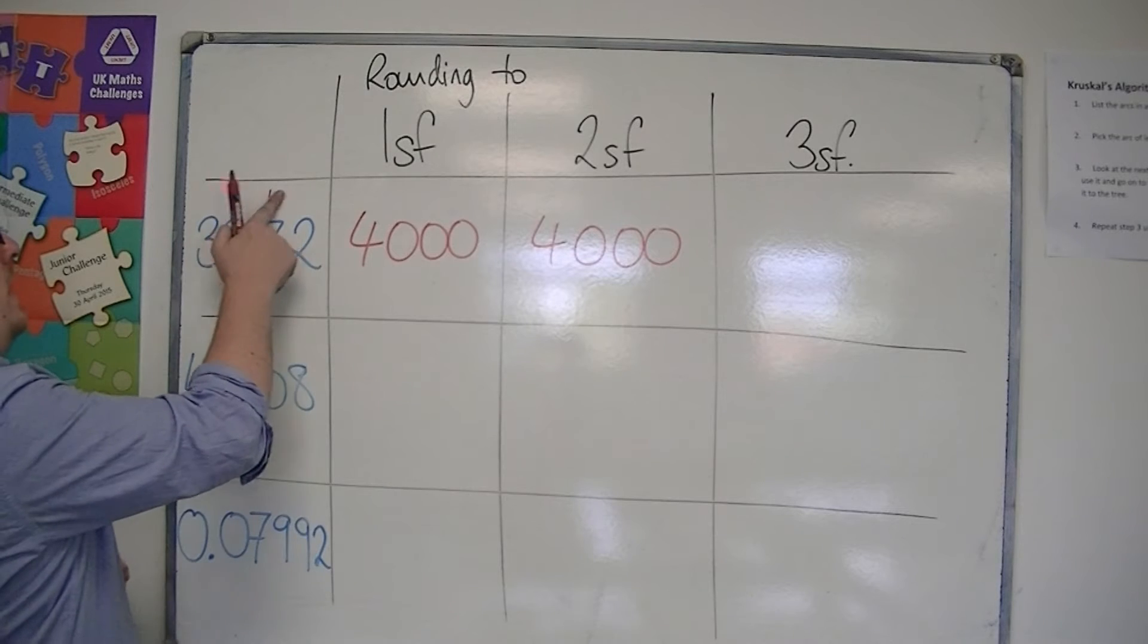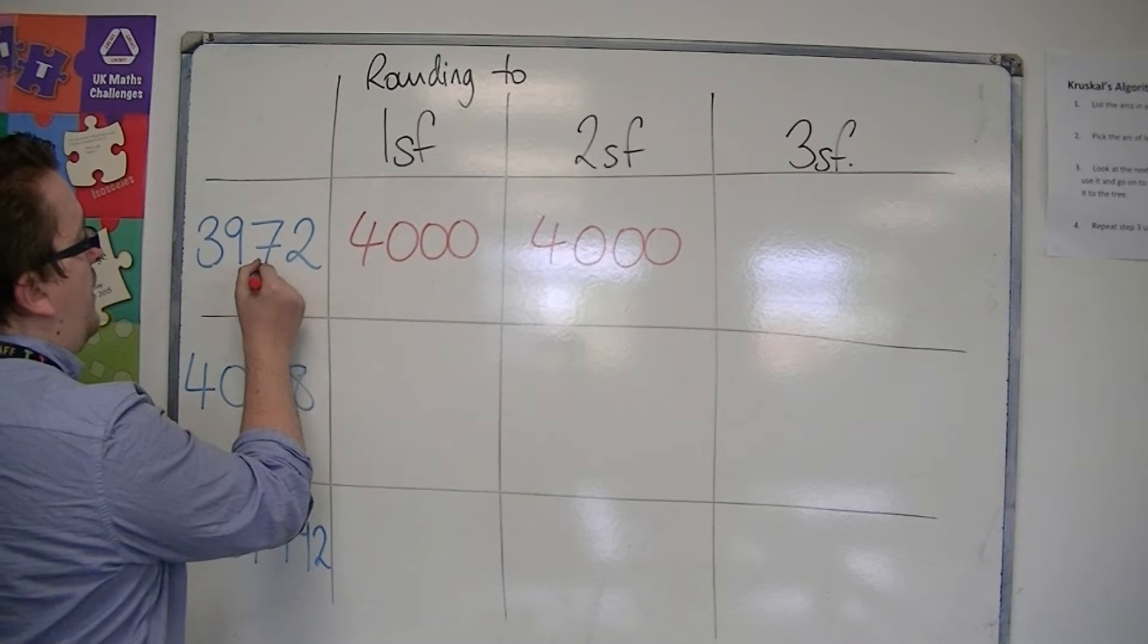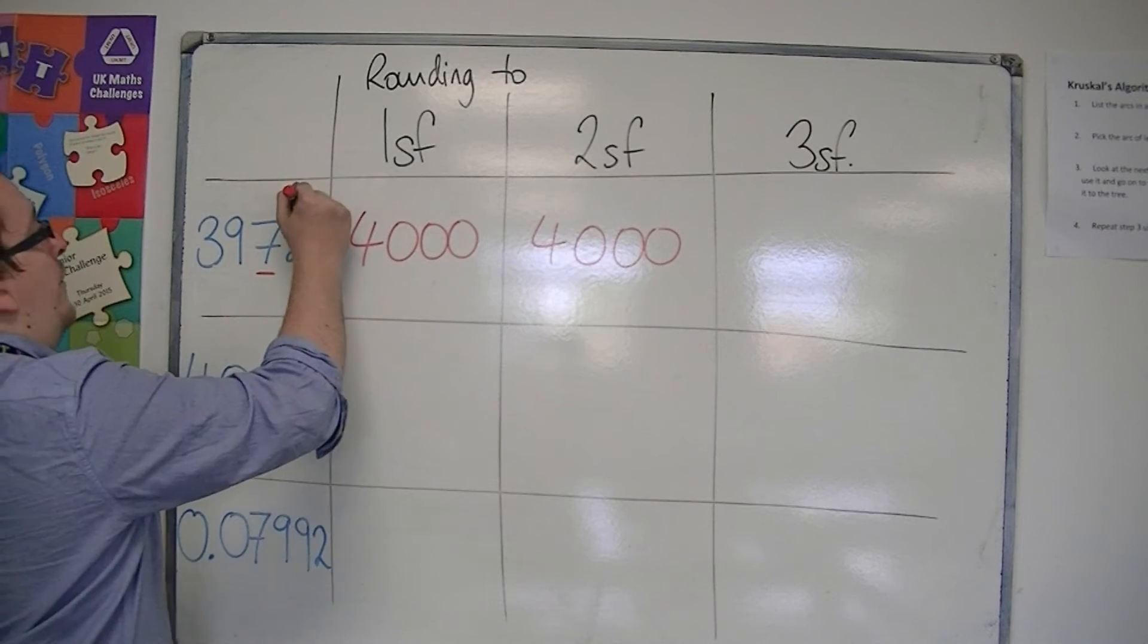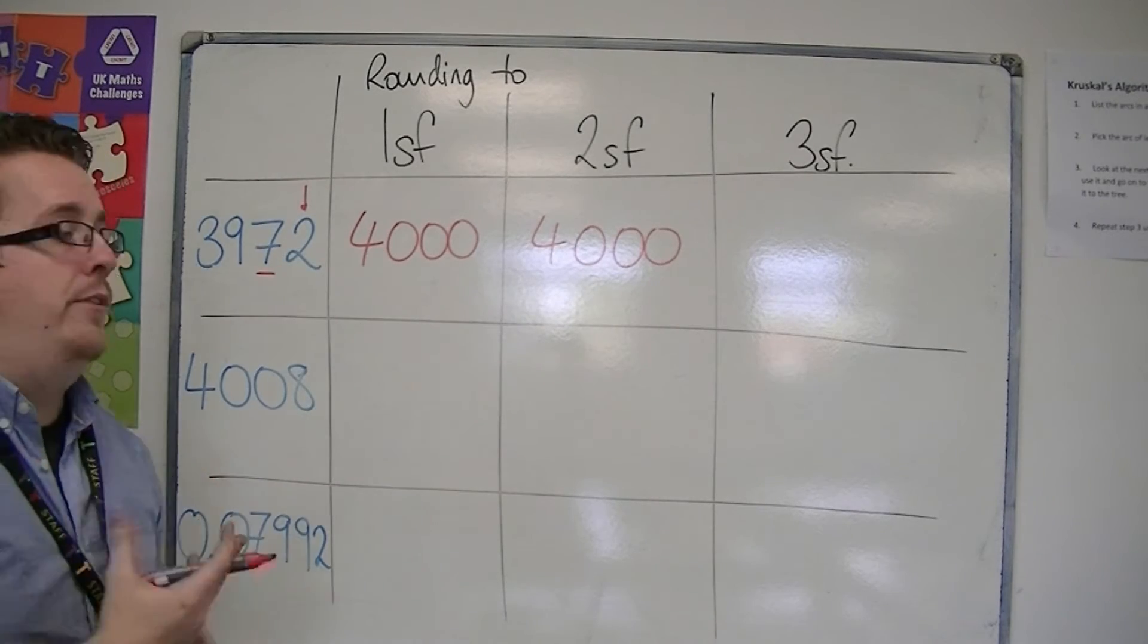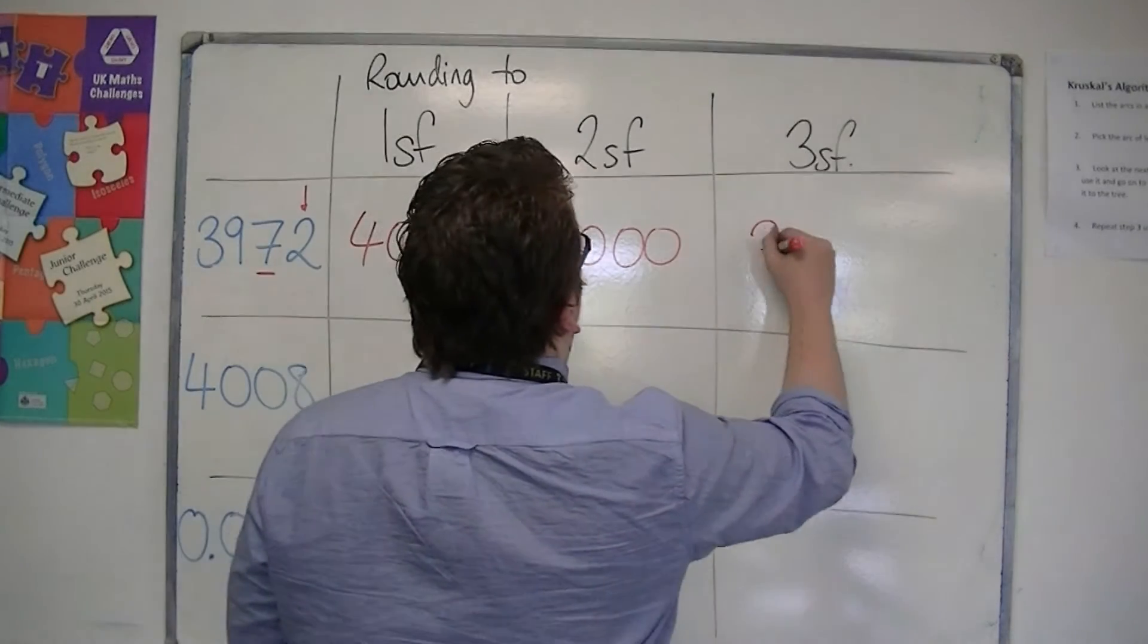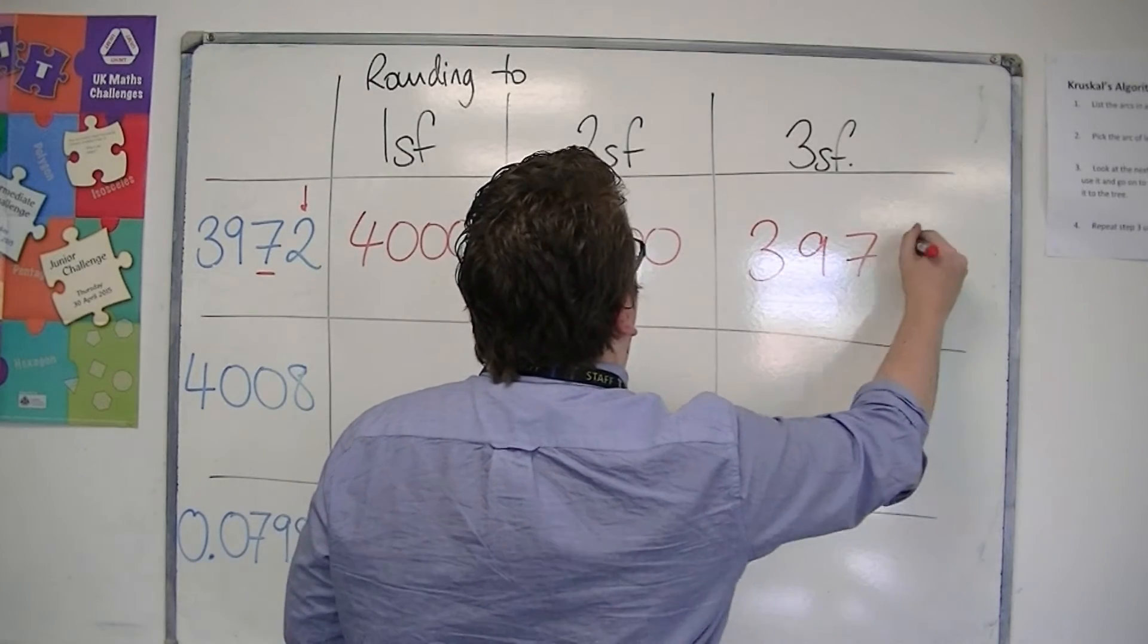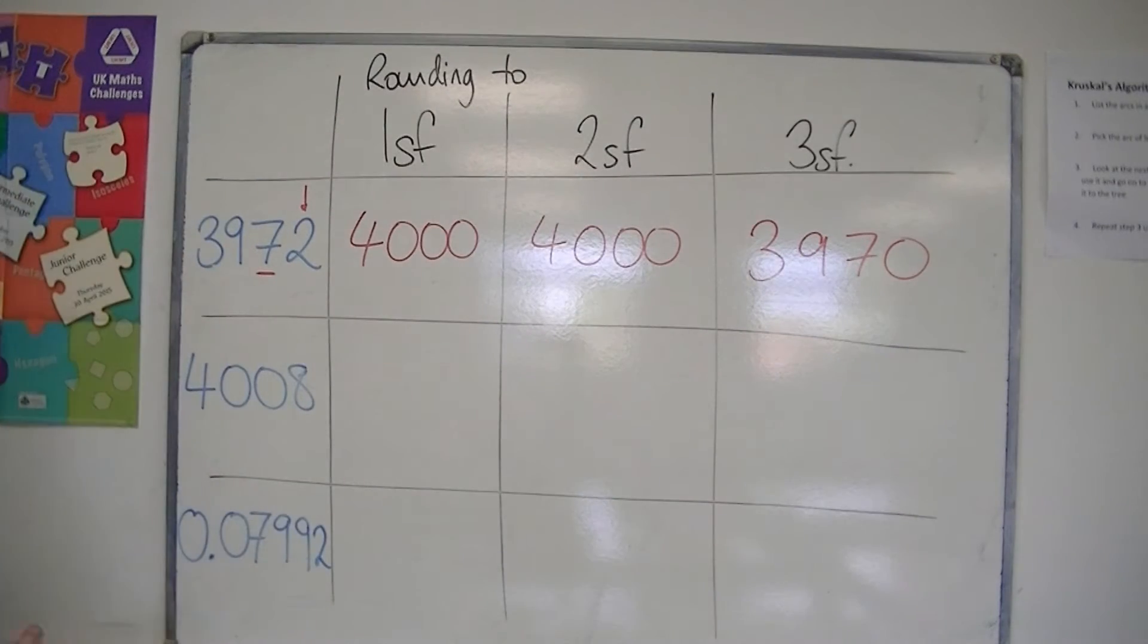Then I look at three significant figures. So that's the third significant figure column. I look at one to the right, and it tells me to round down. So this would be 3,970 to three significant figures.